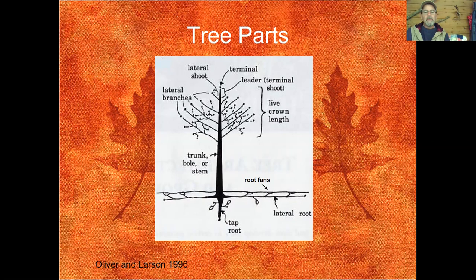Coming down below the surface, below the soil level, you'll see three different types of roots. There's a tap root that anchors the tree. Lateral roots extend outward, and from these lateral roots spring root fans. Root fans are very important because those tiny hair-like roots are the ones that procure the moisture, nutrients, and oxygen to help the tree function. Coming around, you'll see the trunk or bole — sometimes called the stem of the tree. This is where we get our wood products from.